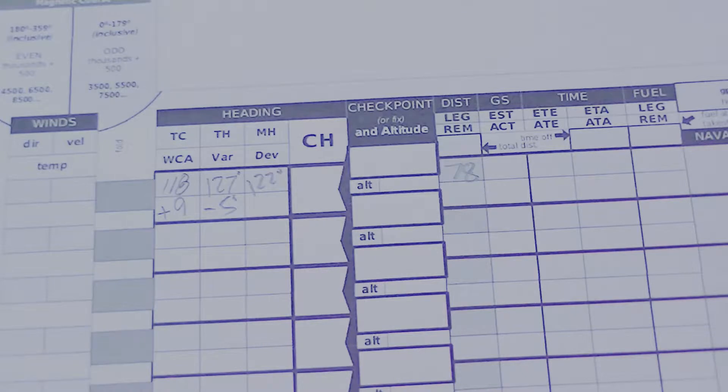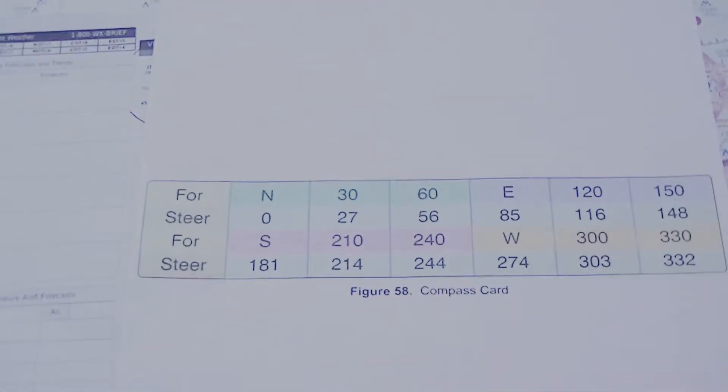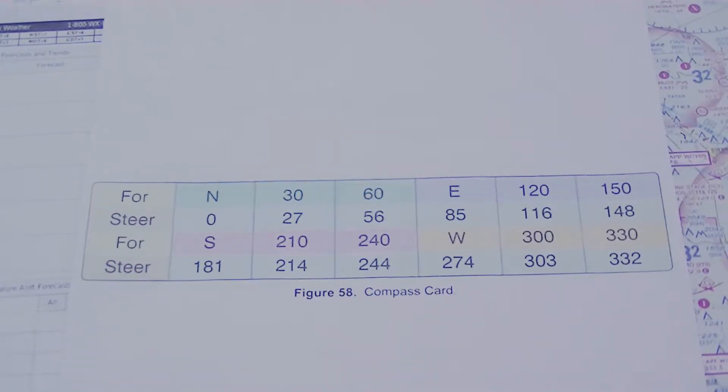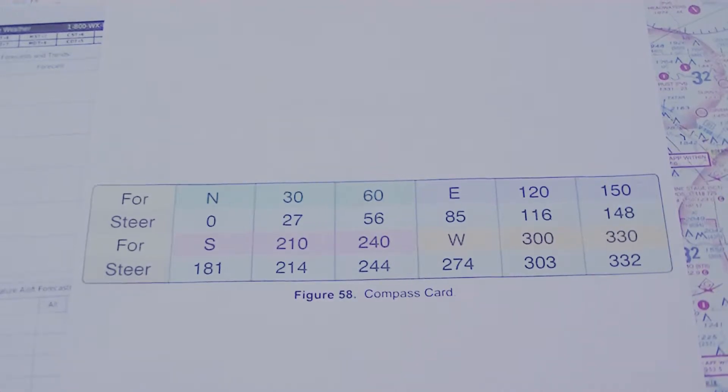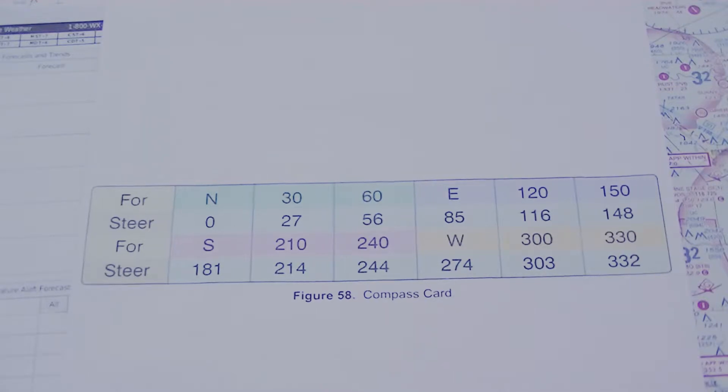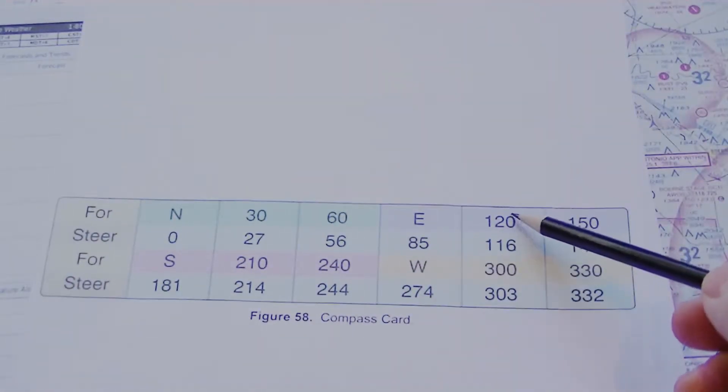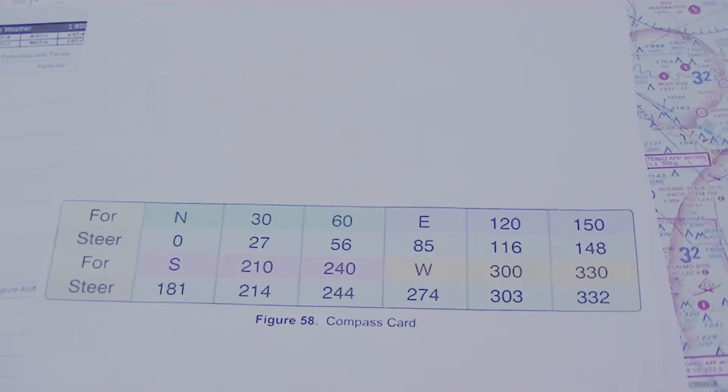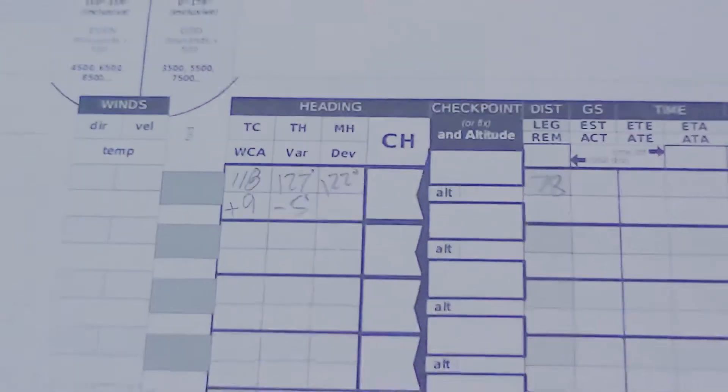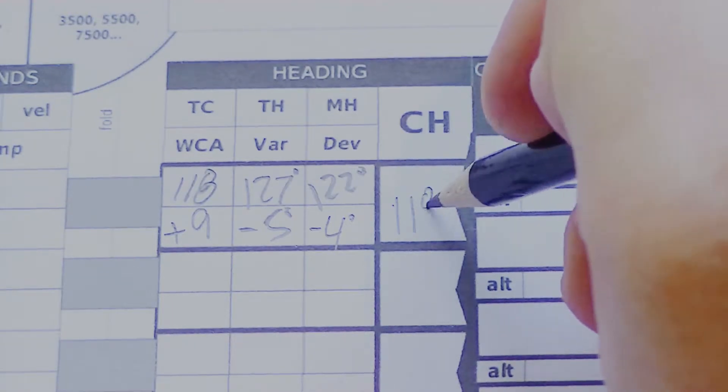There's one more adjustment that we need to make, and that's for deviations in the magnetic compass because of interference with the aircraft's electronics and the frame itself. Typically we'll see a compass card, and that gives us information for this specific installation of the compass. This is a compass card from an FAA exam, figure 58. Our magnetic heading is 122, so that's pretty close to 120. And it says for 120, we would have to steer 116. So we subtract 4 degrees from our magnetic heading to get our compass heading. That gives us a compass heading of 118 degrees.